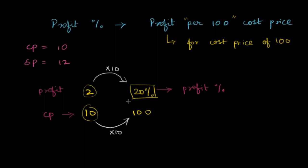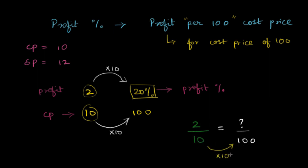Notice that this is not a new thing you're learning. Another way to look at the same thing is as a fraction problem. You made 2 rupees for 10 rupees — how much will you make for 100 rupees? This is just a fraction problem where three things are given and you find the fourth. To go from 10 to 100, you multiply by 10, so you multiply 2 by 10 as well and get 20 by 100, which is 20 percent. The question is simply asking you to convert this fraction to a fraction whose denominator is hundred. You don't need any formula to do this.